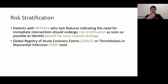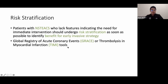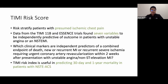After initial therapy for non-ST ACS, risk stratify patients to identify those who would benefit from an early invasive strategy — meaning cath within 24 hours. Per ACC/AHA, two tools are available: the TIMI and GRACE scores. The European Society of Cardiology recommends the GRACE score. The TIMI risk score risk-stratifies patients with presumed ischemic chest pain, based on data from TIMI-11B and ESSENCE trials, identifying seven independently predictive variables.